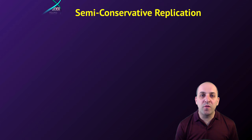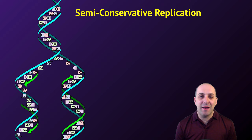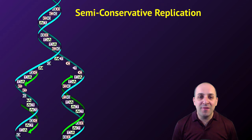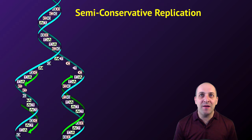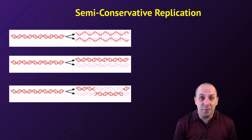The major experimental work that we're going to look at focuses on the determination of how DNA is copied — what we call semi-conservative replication. Looking at a DNA molecule, it seems obvious that this is how DNA could be copied, but there are other possible ways that DNA could possibly be replicated.